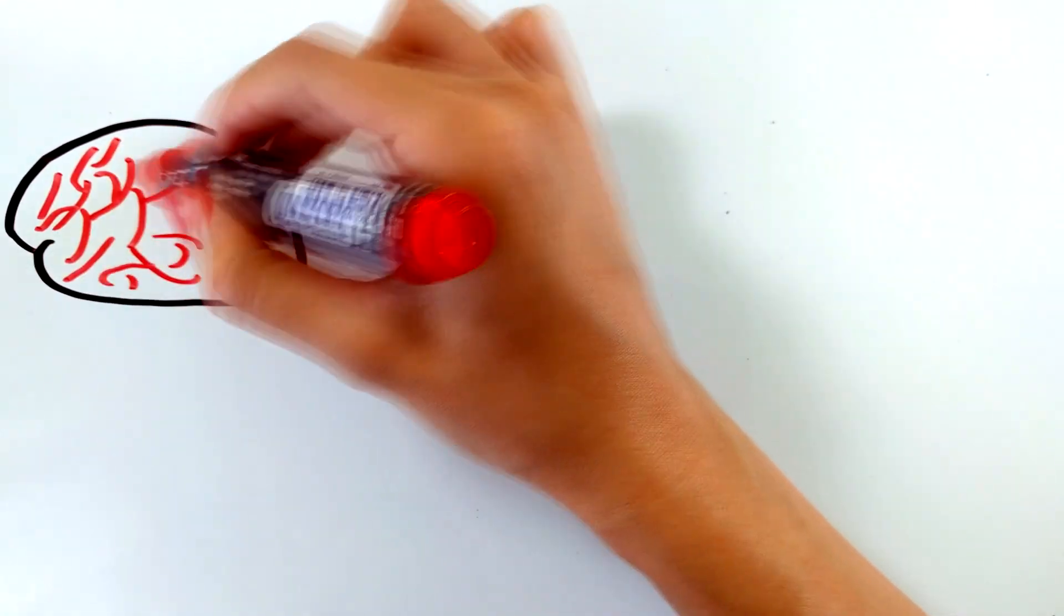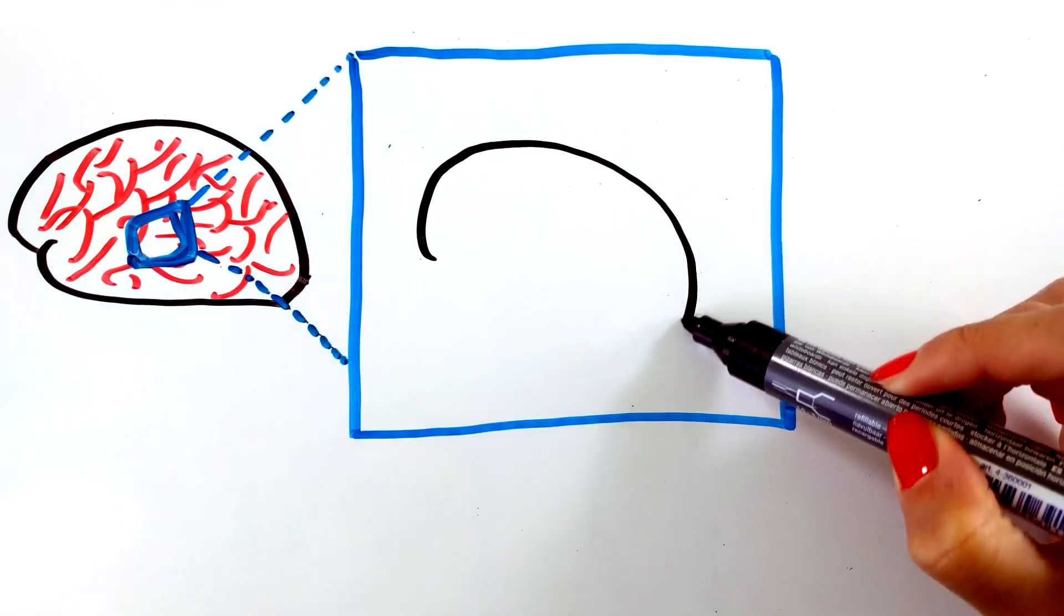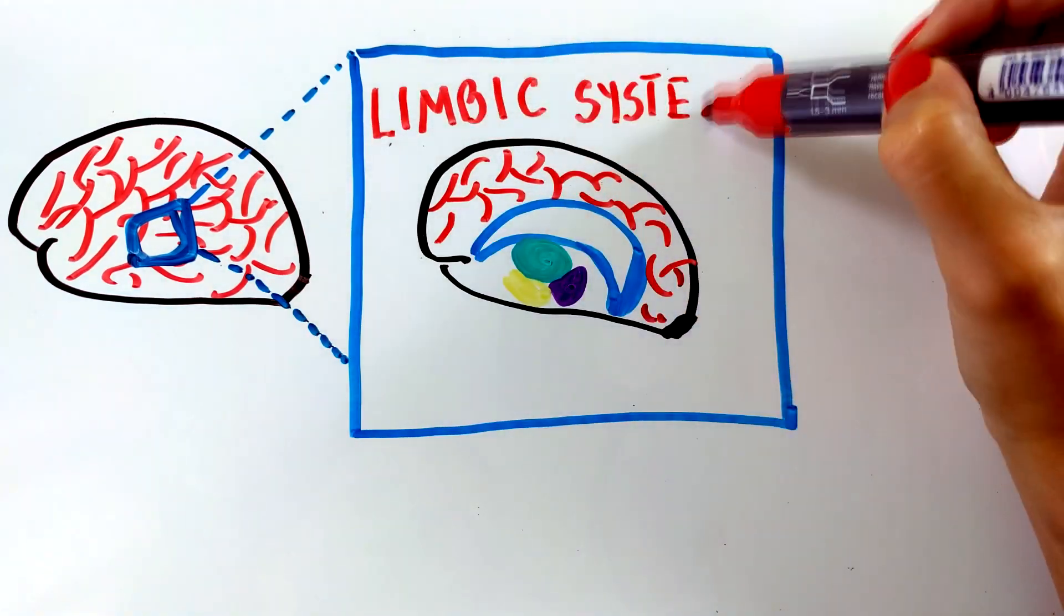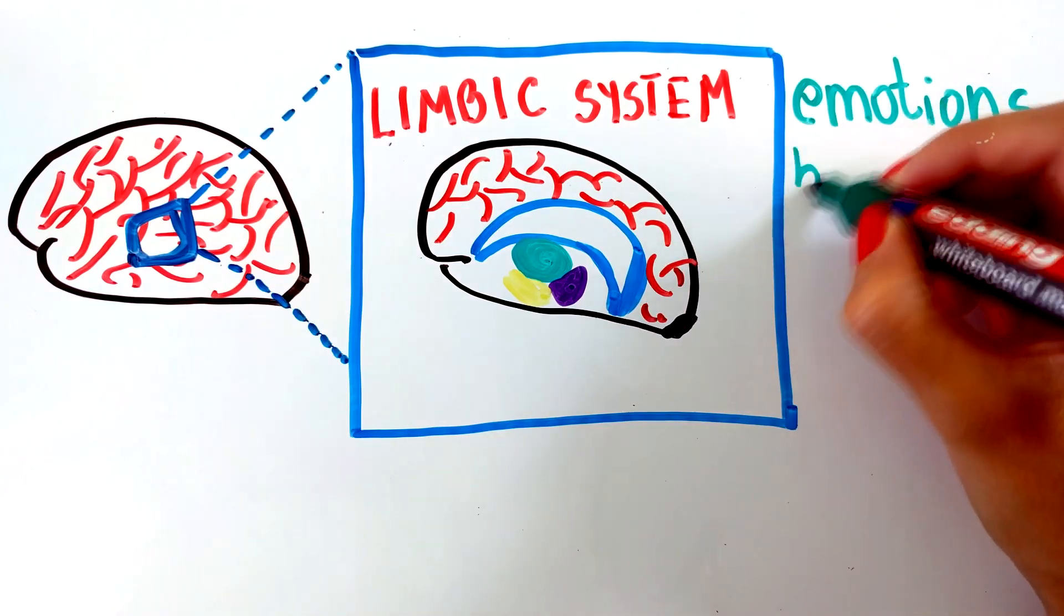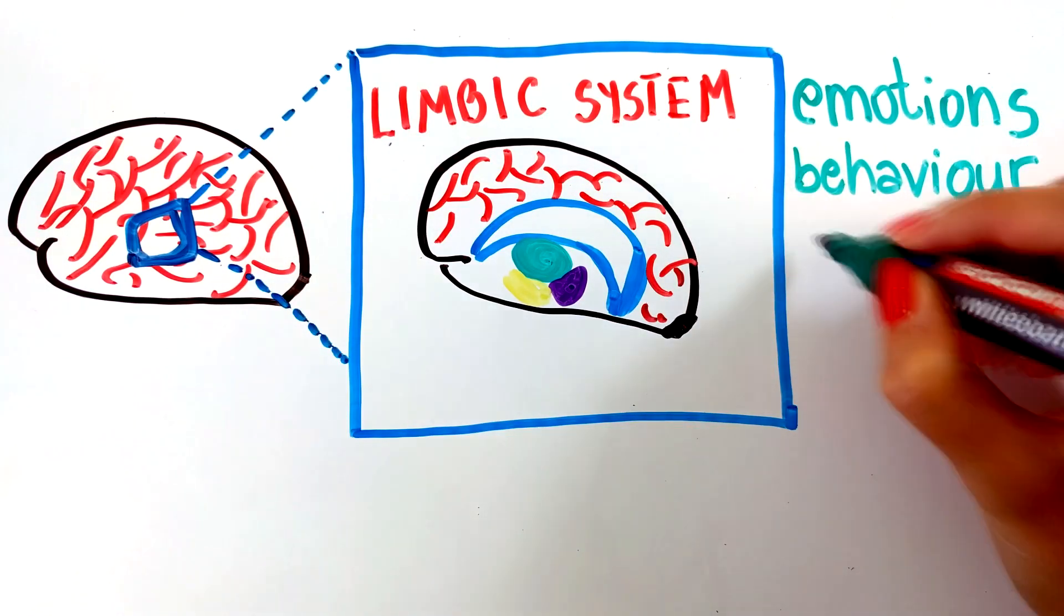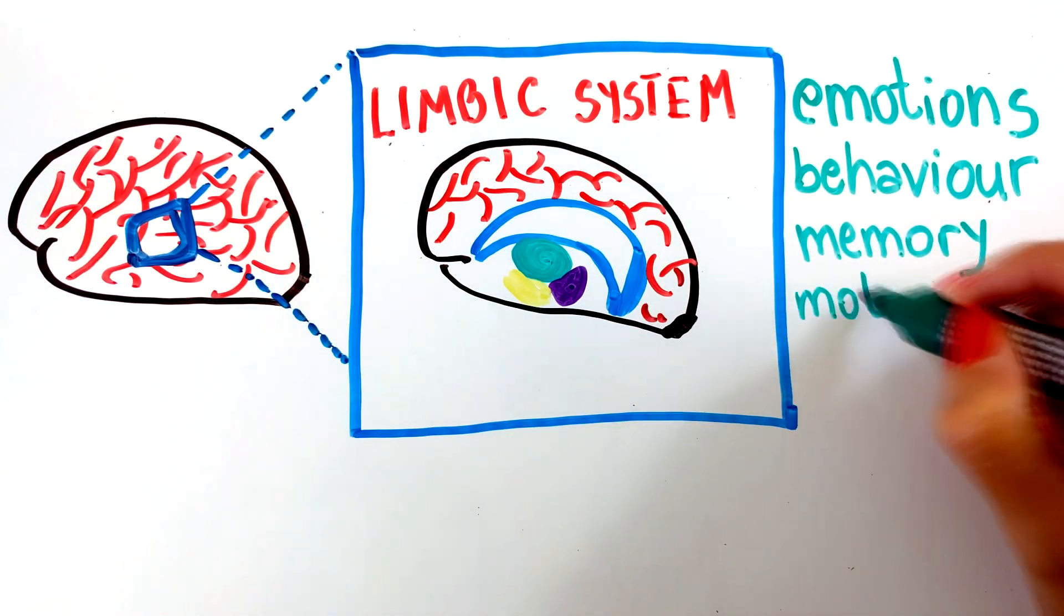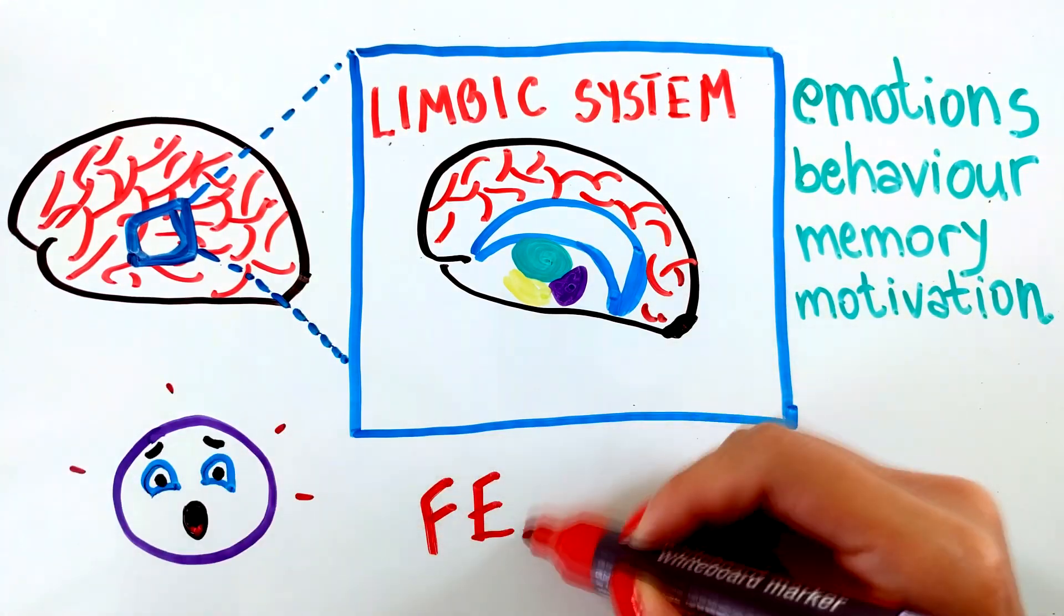To begin we need to further inspect the human brain. Inside there is a section called the limbic system. It is a set of brain structures which are located underneath the cortex. The limbic system plays an important role in regulating emotions, behavior, memory and motivation.